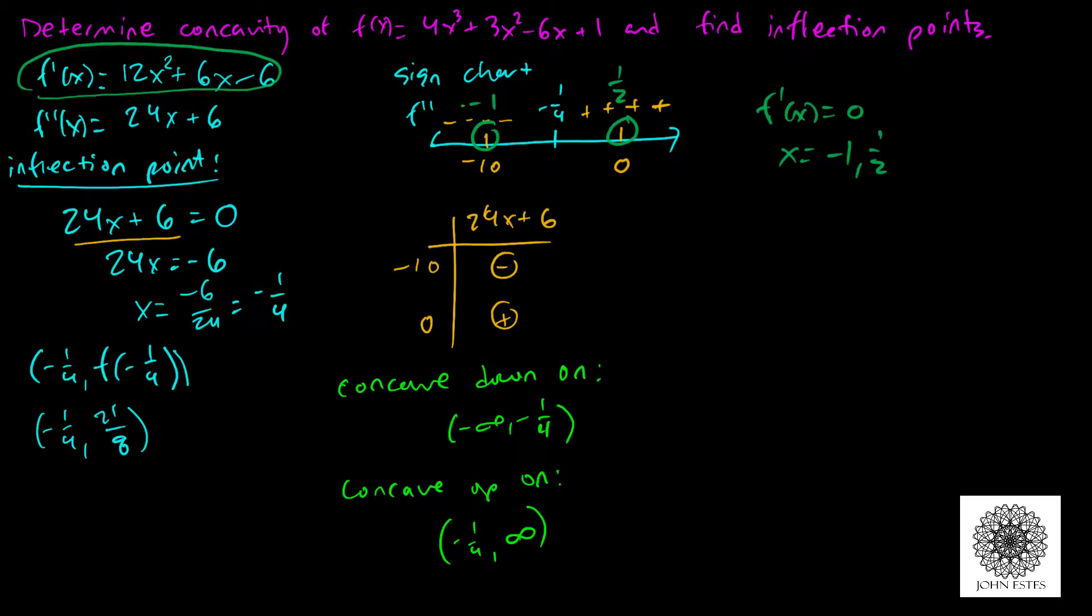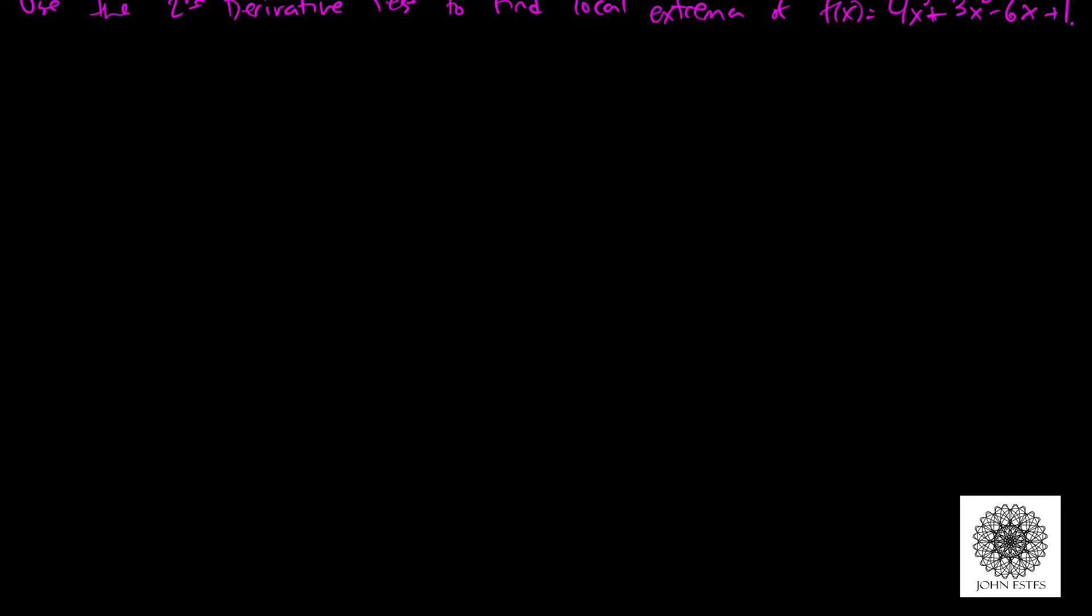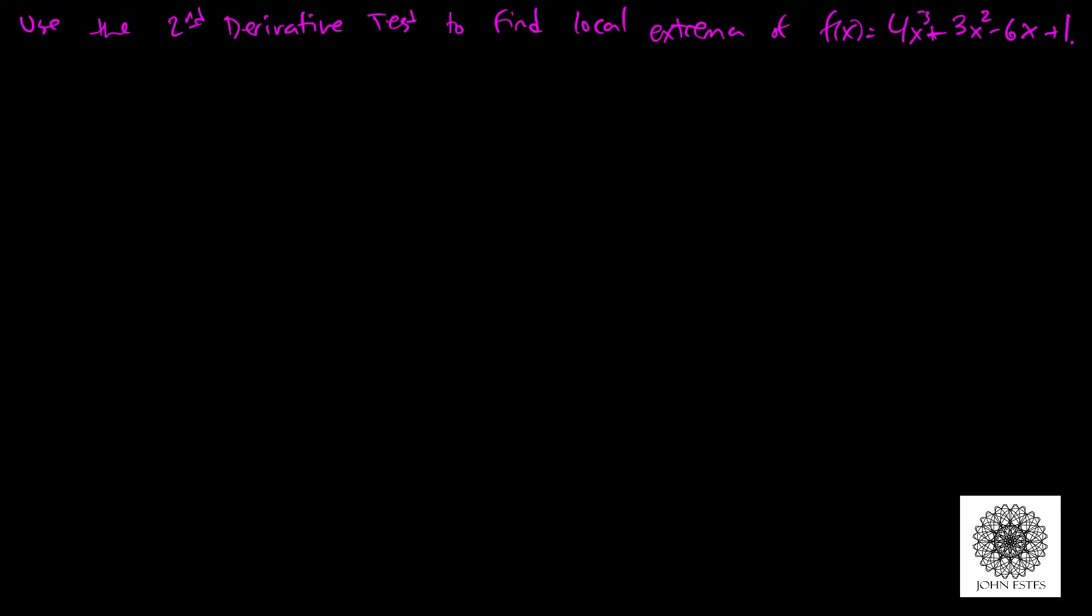concavity? So here I have a local extrema at -1. I have a horizontal tangent line at -1, so something like this. And I'm concave down, so how is that possible? This must be a local max, and that's what the second derivative test says. So here from my sign chart, we can say from the sign chart